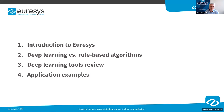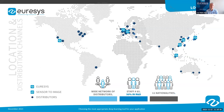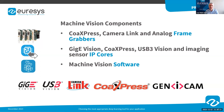Uresys is a manufacturer of machine vision components. Our headquarters is in Liège, located in the eastern part of Belgium. We have R&D teams in Belgium and Germany. We also have sales and support offices in Europe, USA, Singapore, China, Korea, and Japan. Currently our staff counts 85 employees, and 50 percent of us are working in R&D departments. Uresys also benefits from an extensive network of distributors and is renowned for providing high quality products and premium support to OEMs and system integrators.